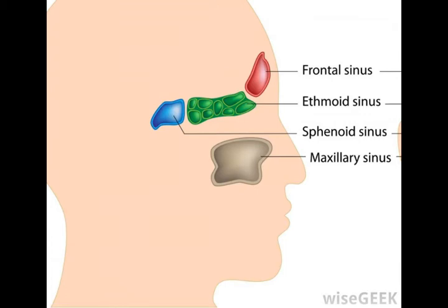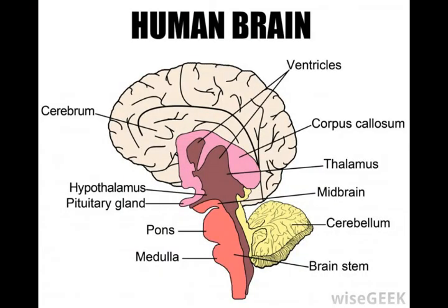Amniotes, a group of animals including mammals, birds, and reptiles, can be classified according to type of skull. Some amniotes have bilaterally symmetrical holes, called temporal fenestra, in the temporal bone of the cranium.